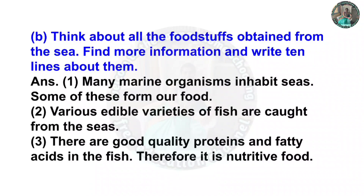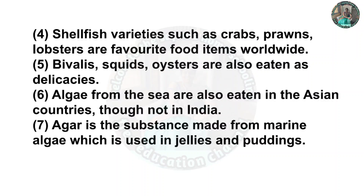Answer: First, many marine organisms inhabit the seas; some of these forms are food. Second, various edible varieties of fish are caught from the seas. Third, there are good quality proteins and fatty acids in fish, therefore it is nutritive food. Fourth, shellfish varieties such as crabs, prawns, and lobsters are favorite food items worldwide. Fifth, squids, oysters are also eaten as delicacies.